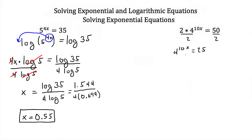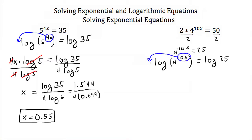Now let's take the log of both sides. We'll have the log of 4 to the 10x equal to the log of 25, using the common log, or log base 10. Because 10x is in the exponent, I can use the power property and pull it out front, giving us 10x times the log of 4 is equal to the log of 25.